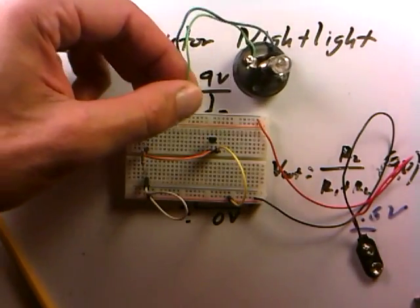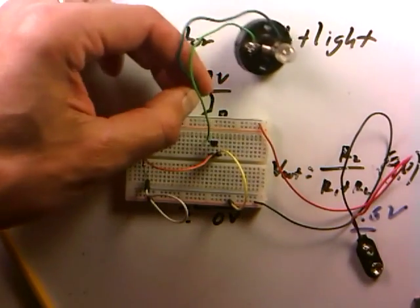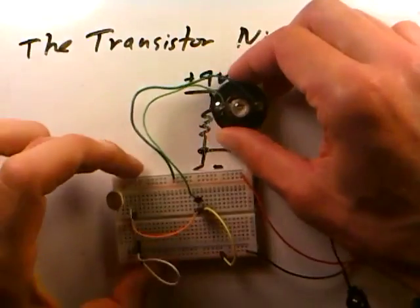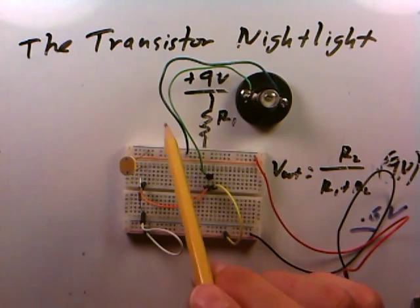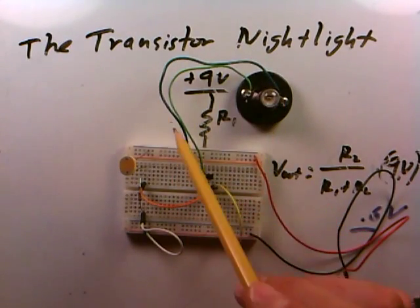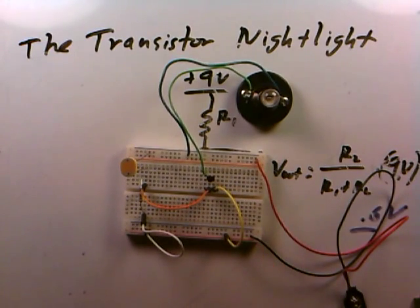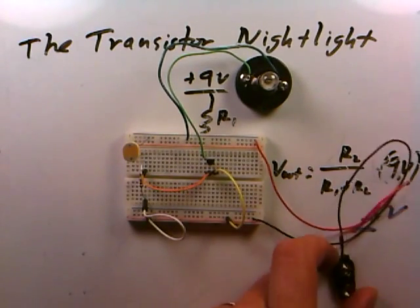I'll put the light bulb in — this is what we want to turn on. I'll connect the night light to the collector and the other side of the night light to the power. What will happen is when the transistor turns on, current will be allowed to flow from the 9 volt lead through the light bulb, out of the light bulb, into the collector of the transistor, and out of the emitter to ground. That'll turn the light bulb on if the base is at 0.6 volts above the emitter, which is held to ground. I believe this is the whole circuit right here.